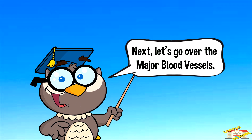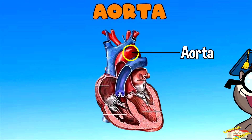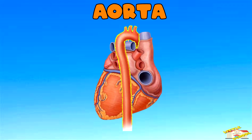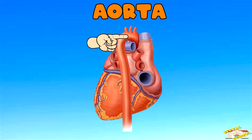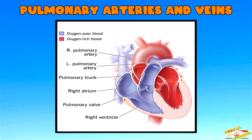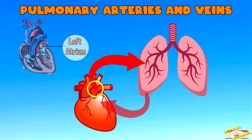Next, let's go over the major blood vessels. Aorta: the aorta is the largest artery that carries oxygen-rich blood from the left ventricle to the body. Pulmonary arteries and veins: the pulmonary arteries carry deoxygenated blood from the right ventricle to the lungs, while the pulmonary veins bring oxygenated blood from the lungs to the left atrium.